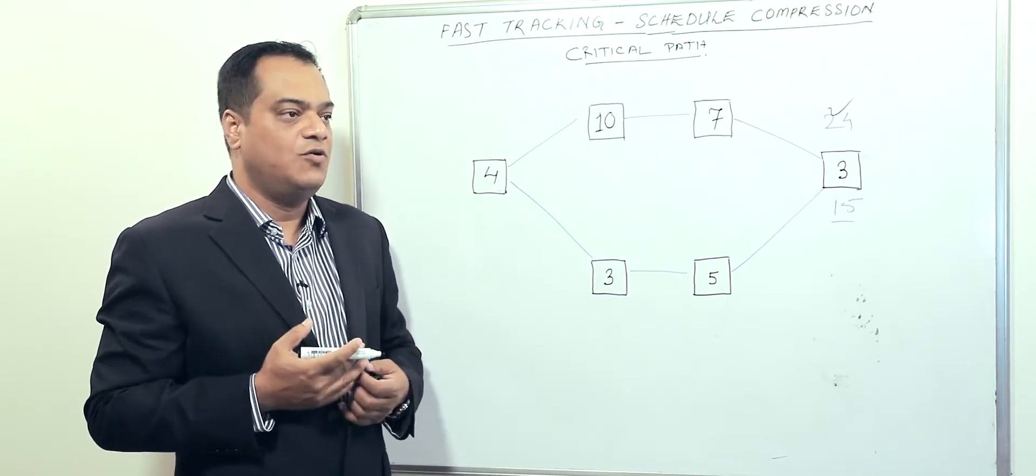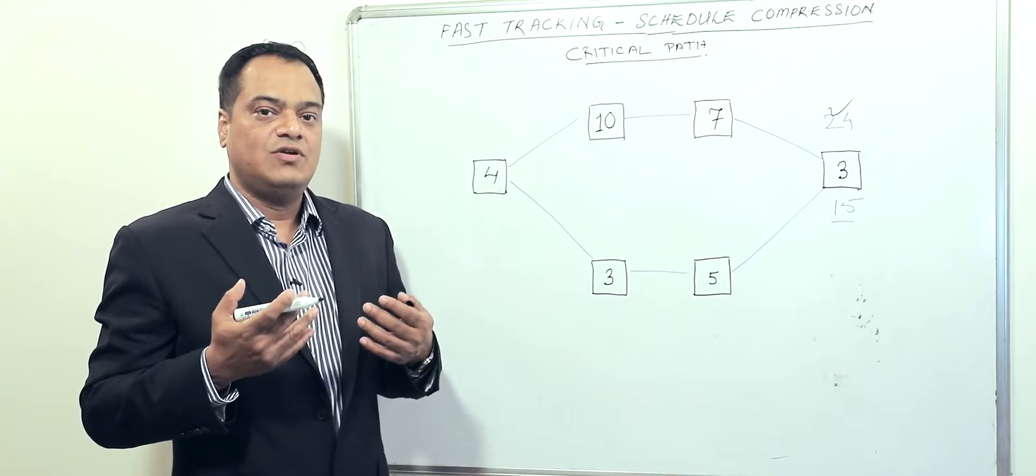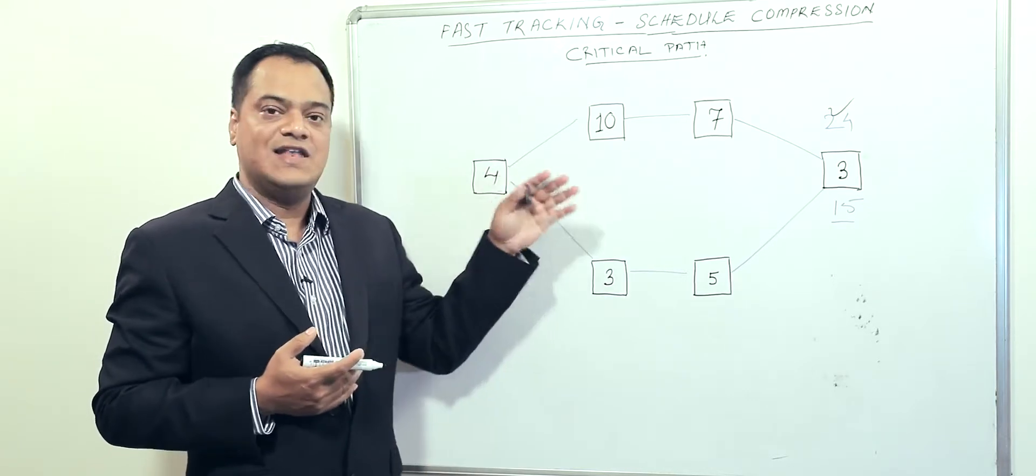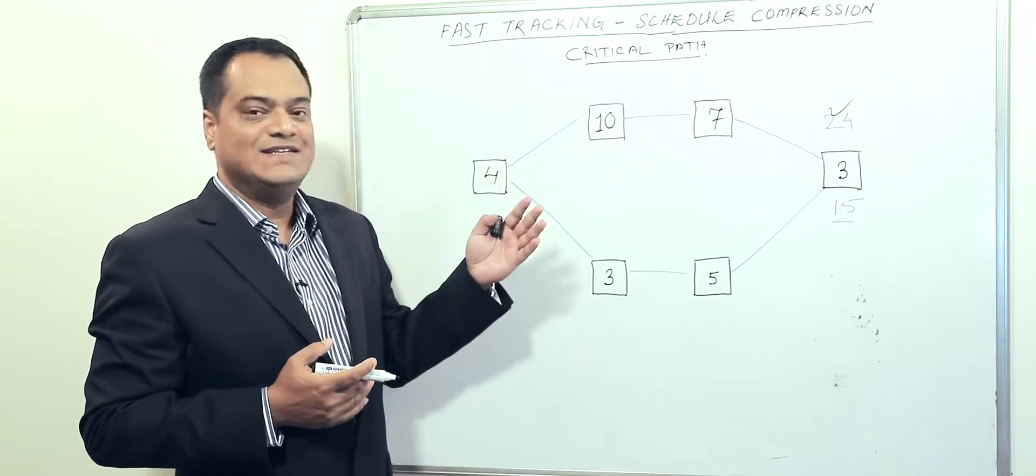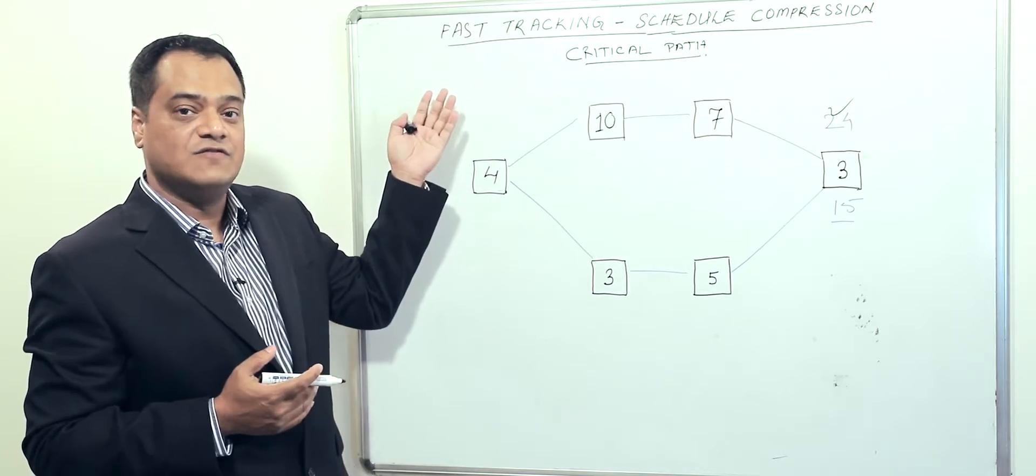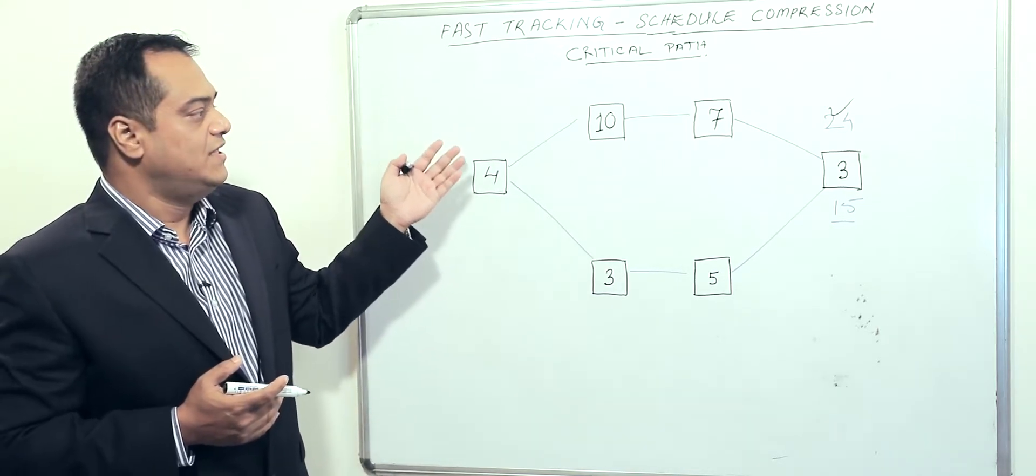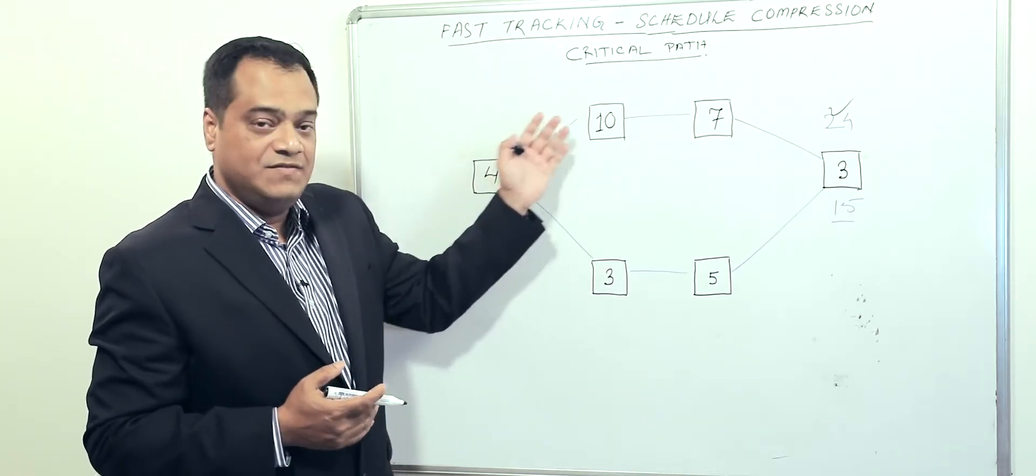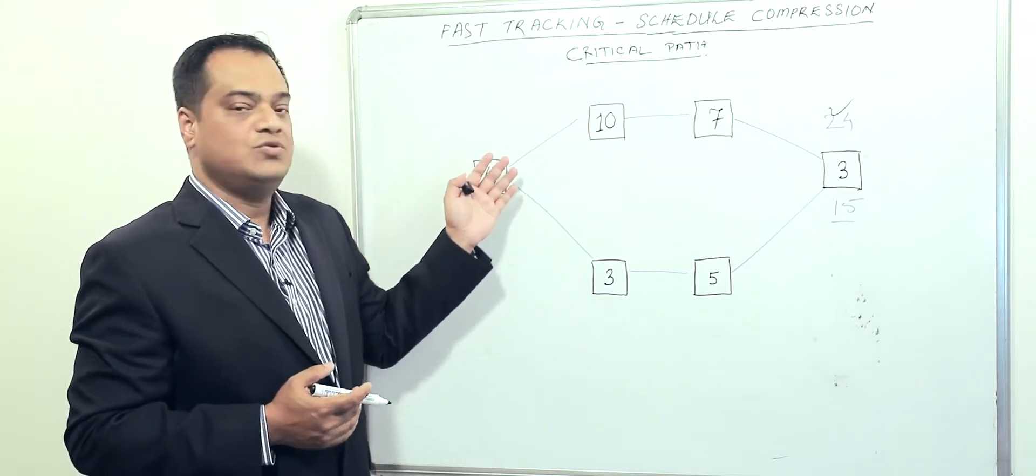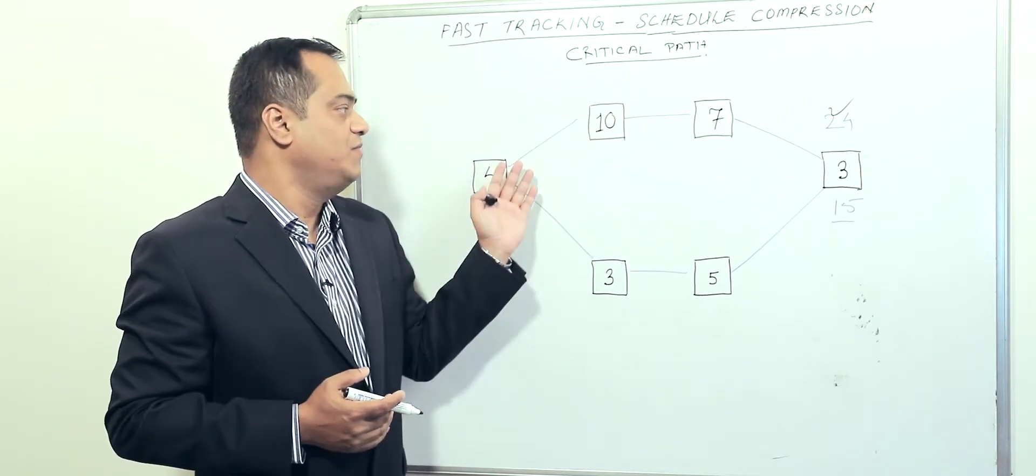It needs reworking the entire schedule. One technique is fast tracking. Fast tracking basically means the activities that were supposed to run in sequence - one after another - we try to take one activity outside the sequence and run in parallel.